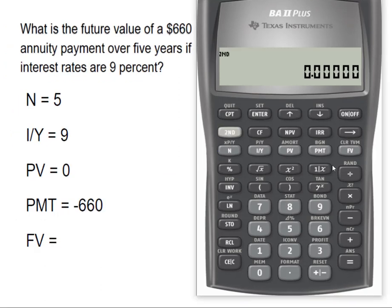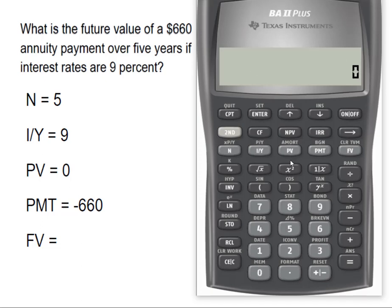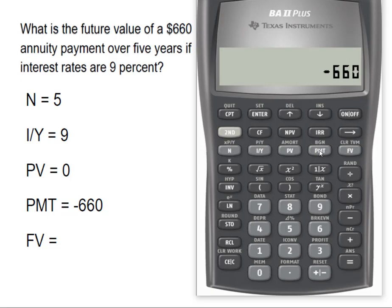I've got my calculator. I always want to make sure that I clear my work. I have an N of 5. I have an interest rate or I/Y of 9. My present value, remember, we said was zero. Our payment is going to be entered as $660 and that's a negative payment. And now we're going to say compute future value.